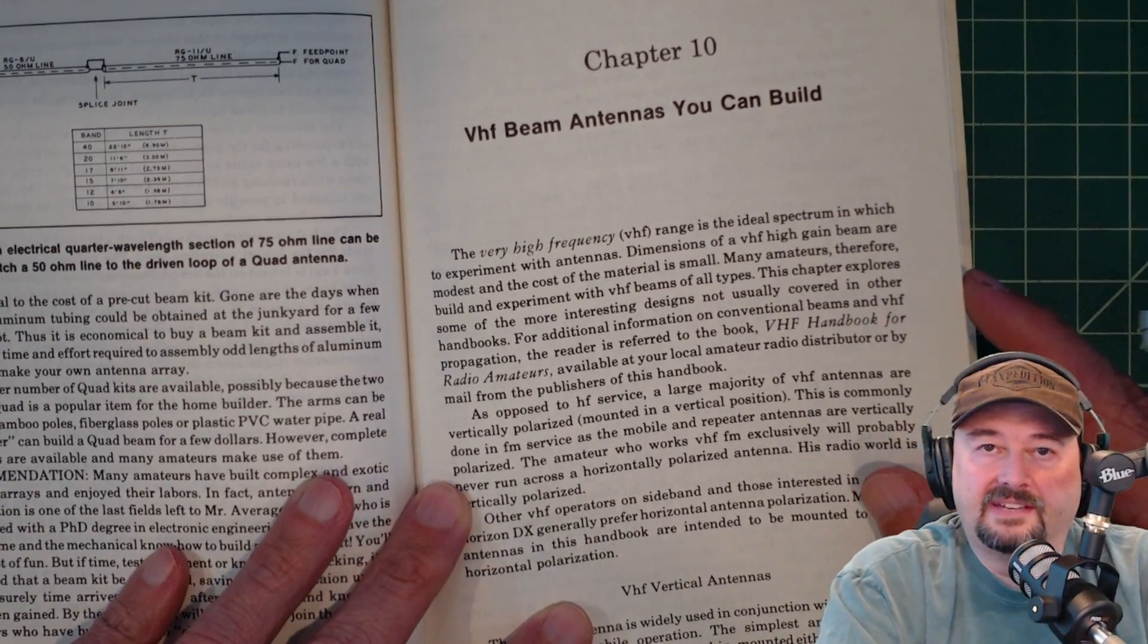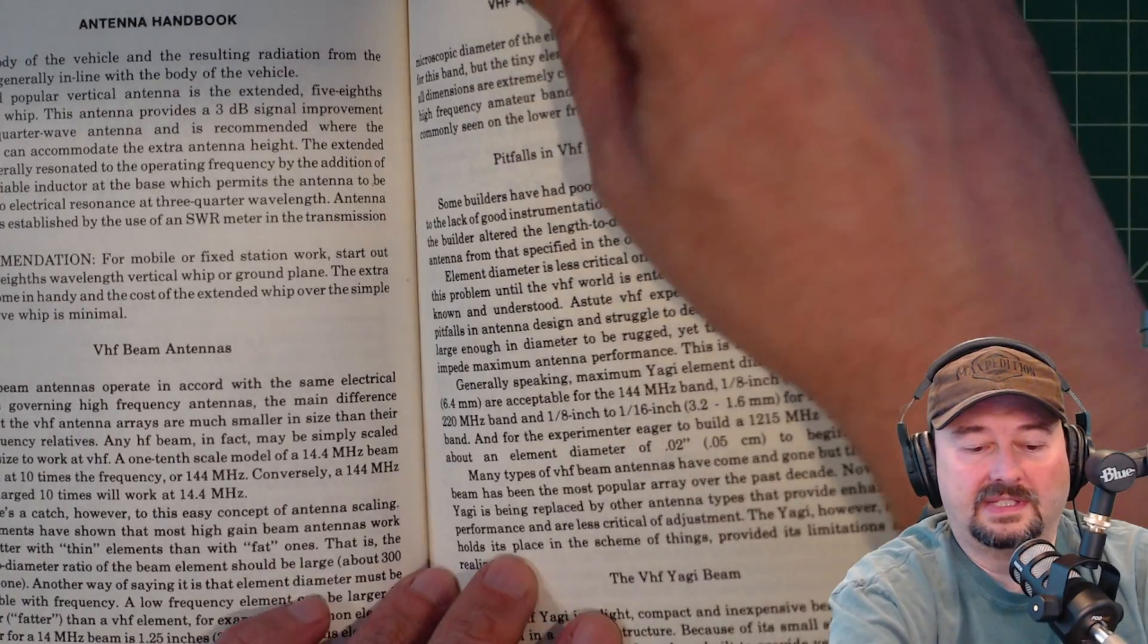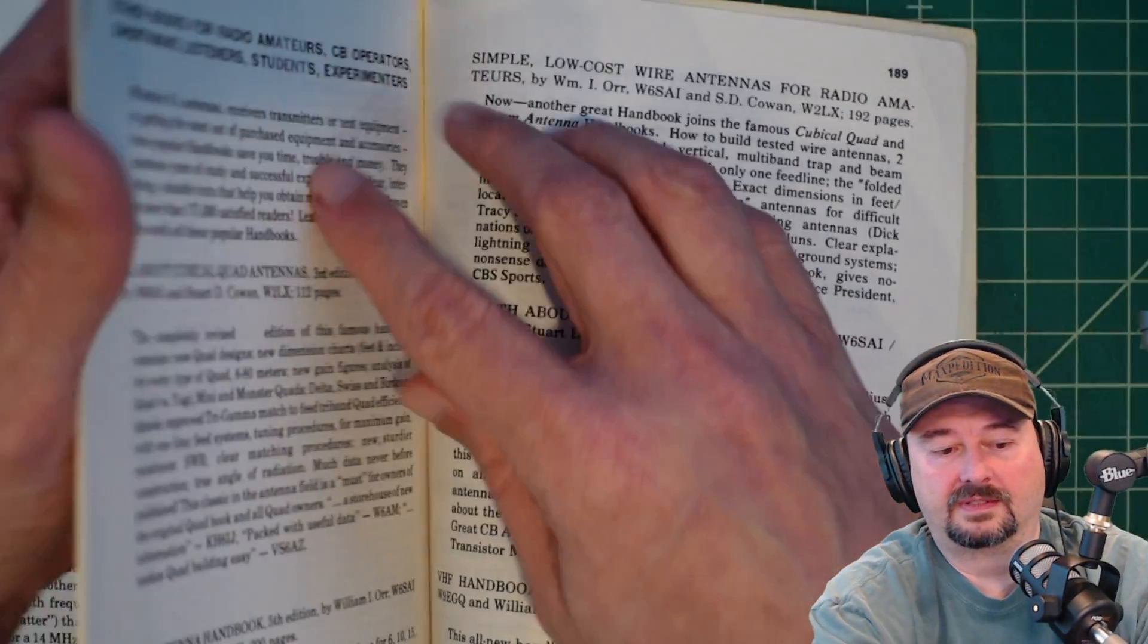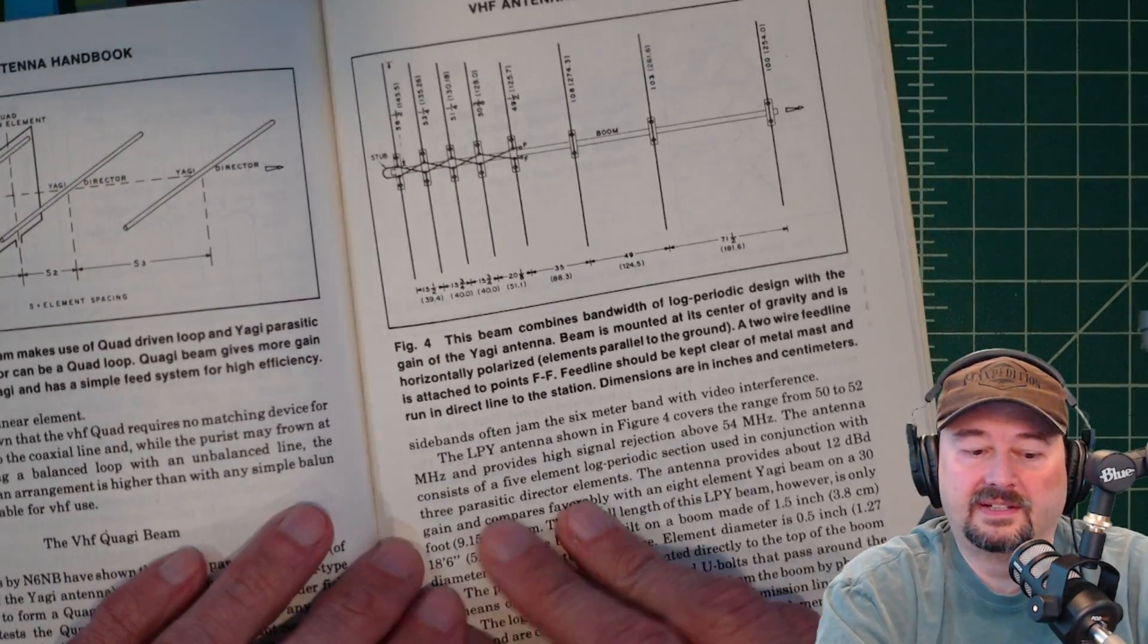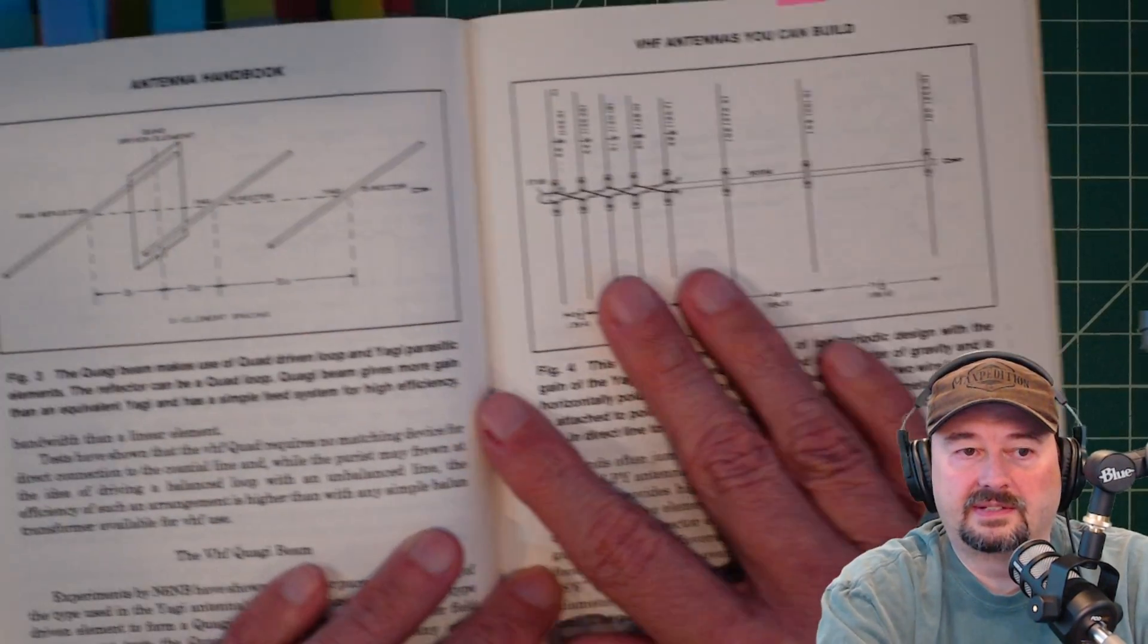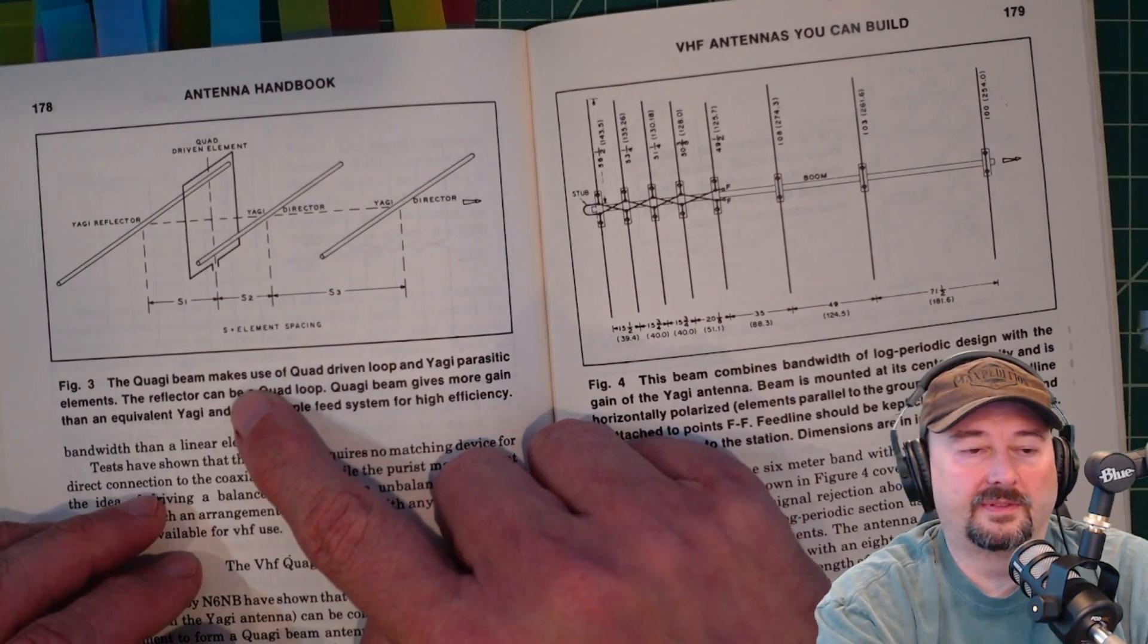Chapter 10 talks about VHF beams that you can build. And the one I thought was really interesting is right around, and this is a log periodic Yagi. And here are some dimensions for building this. Here are some dimensions for building the quad Yagi.